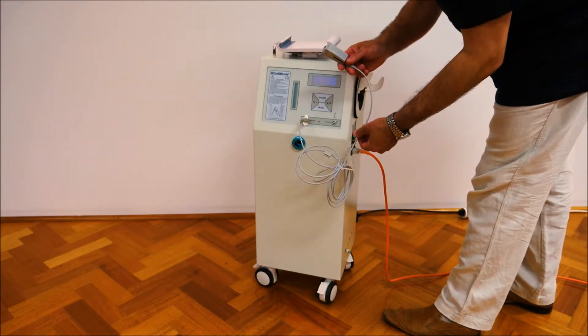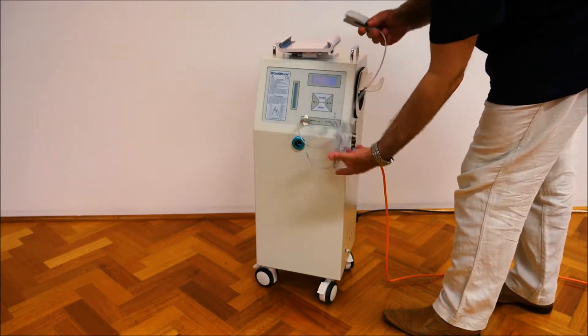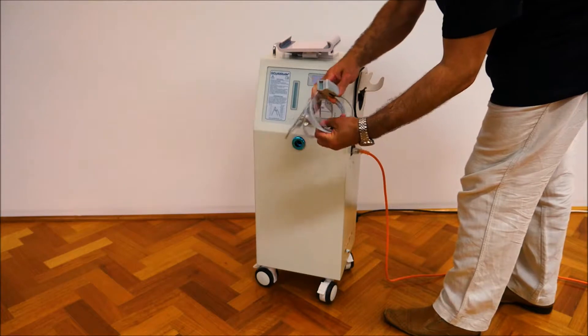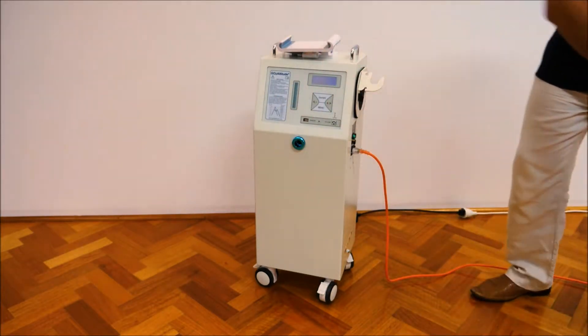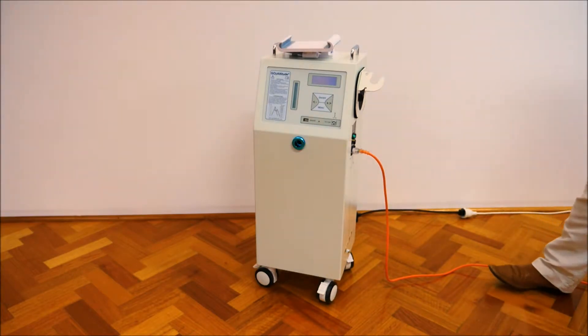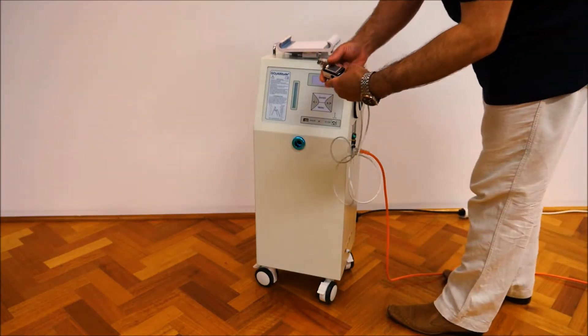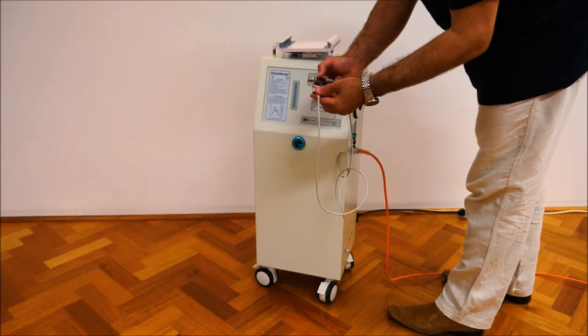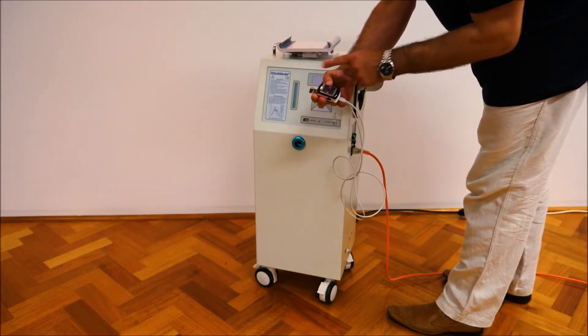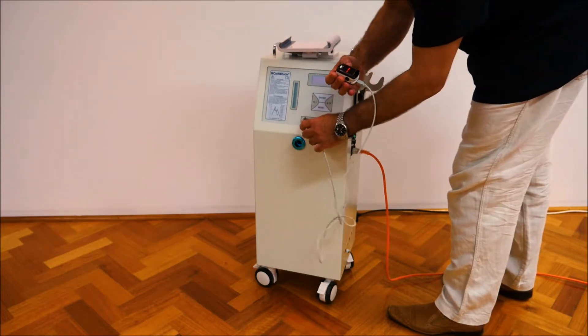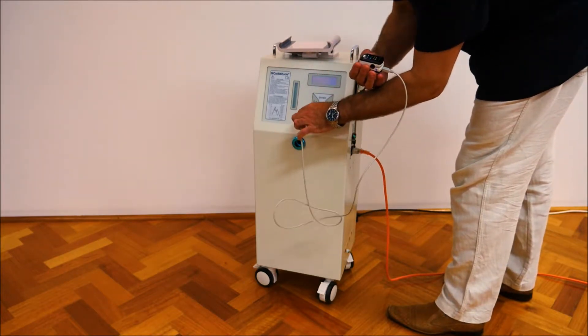Two pulse oximeter sensors are supplied with the unit. One is without any display with a long 3 meter cable. And the other alternative one is a sensor with a display. And it has to be powered by pressing this power button. It's inserted exactly the same way as the first one.